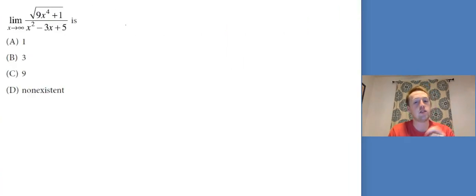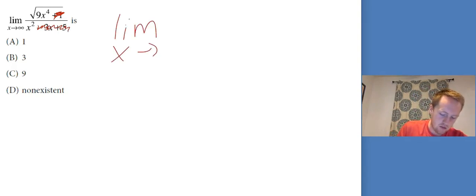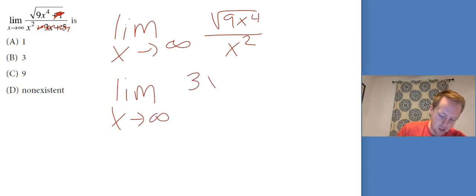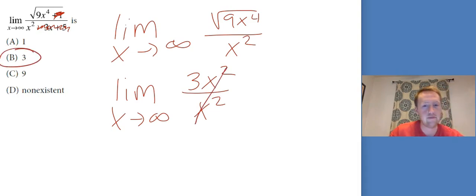Let's take this one. We've got the limit as x goes to infinity: 4 times square root of 9x to the fourth plus 1 over x squared minus 3x plus 5. At infinity, adding 1 isn't going to change anything, and minus 3x plus 5 isn't going to change much. So essentially we're left with the limit as x goes to infinity for square root of 9x to the fourth over x squared. That simplifies to 3x squared over x squared. It's 3.